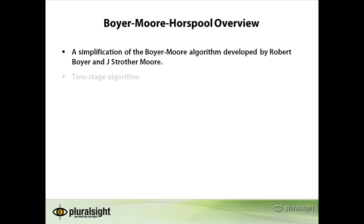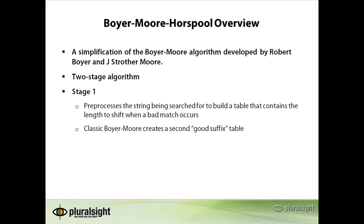This algorithm operates in two stages. The first stage is the preprocessing stage. During this stage, a table is built that contains the number of characters that can be skipped any time a mismatch occurs. This table is known as the bad match table, and we will see how to build it shortly.